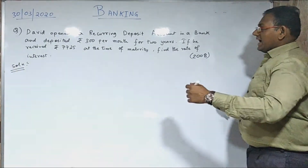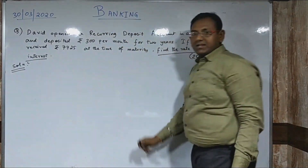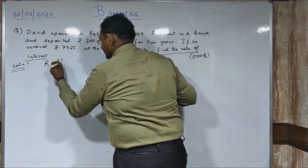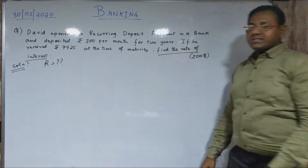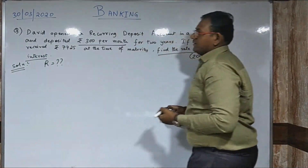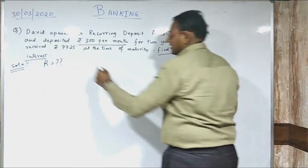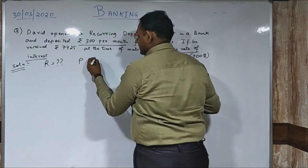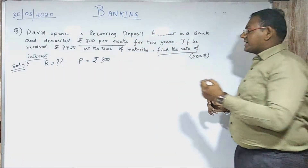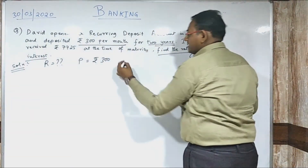He received rupees 7725 at the time of maturity. Find the rate of interest. From the last line you can easily figure out that you need to find the rate of interest. The principal is given — you are depositing rupees 300 per month. The time is also given: 2 years.